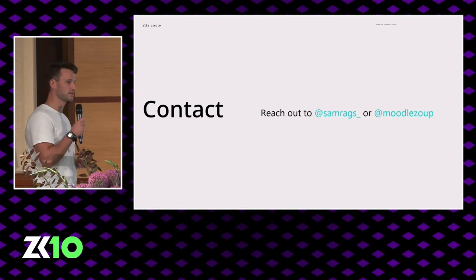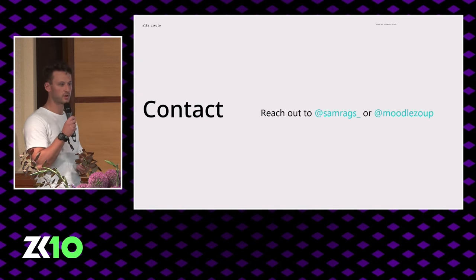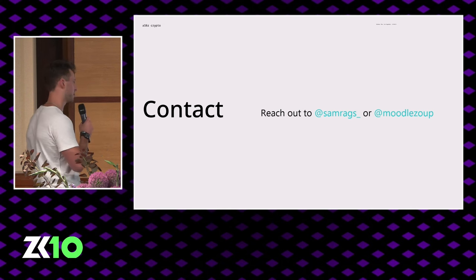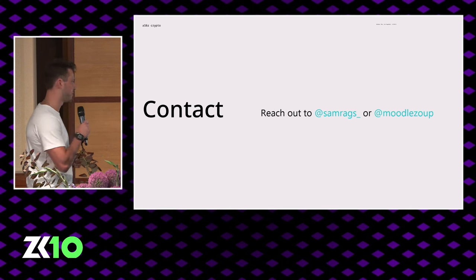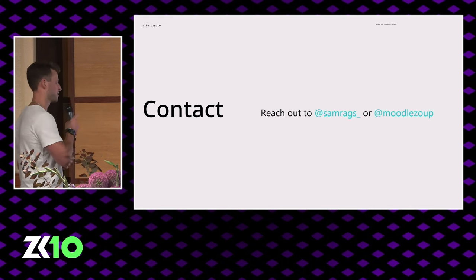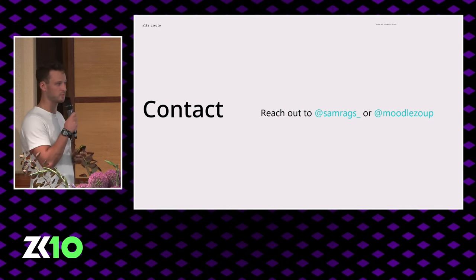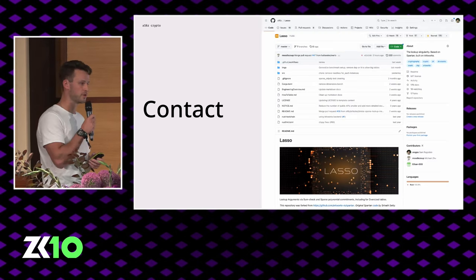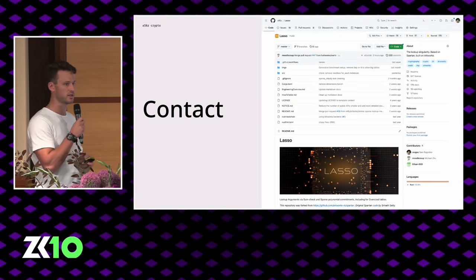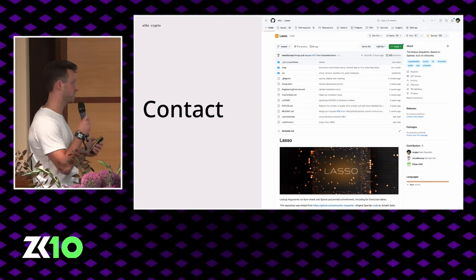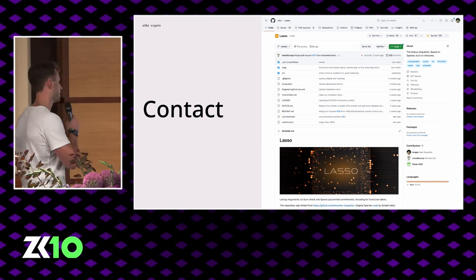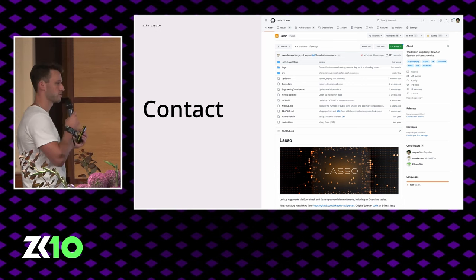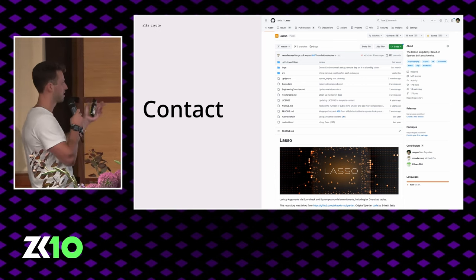That's it. If you have any questions, feel free to reach out to us directly on x.com — I'm at Sam_Rags_underscore, he's at Moodle_Zoop. Alternatively, feel free to reach out via GitHub. This is open source and will always be open source going forward. We have an issues tab with a great range of issues from basic stuff down to arithmetization and assembly-level optimizations.